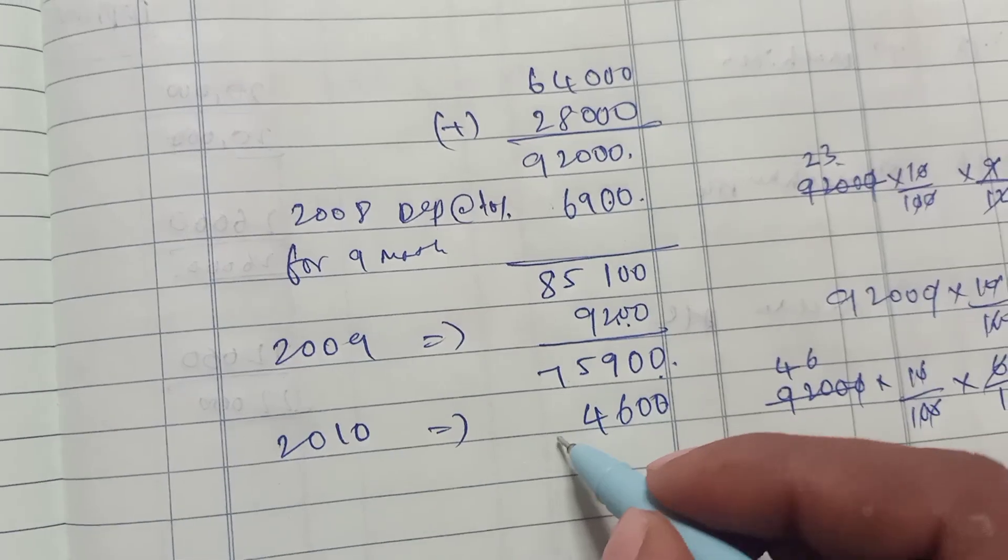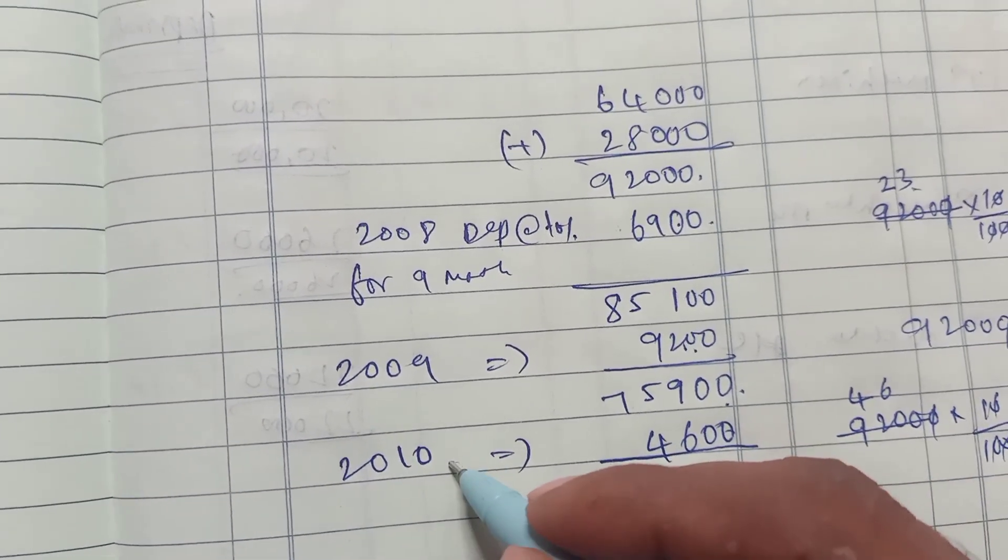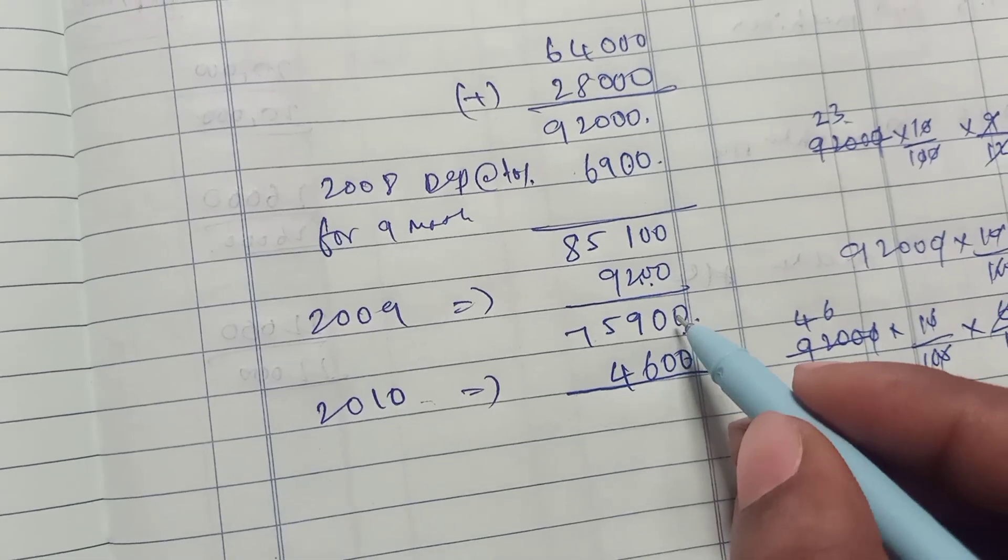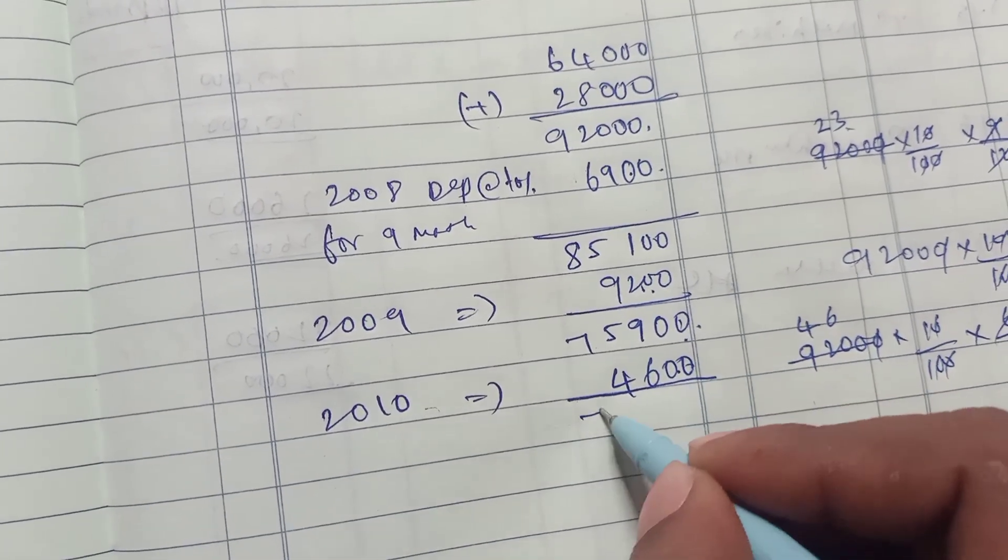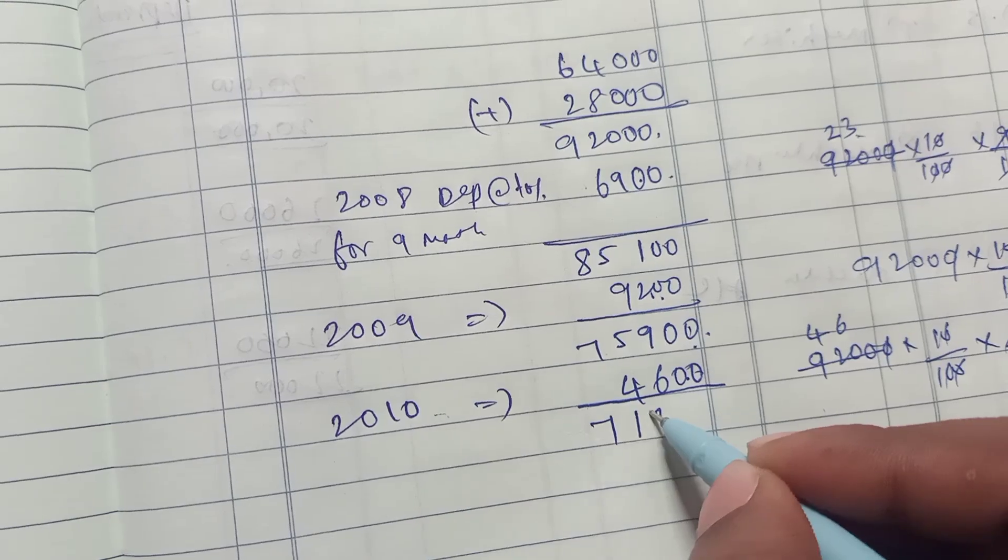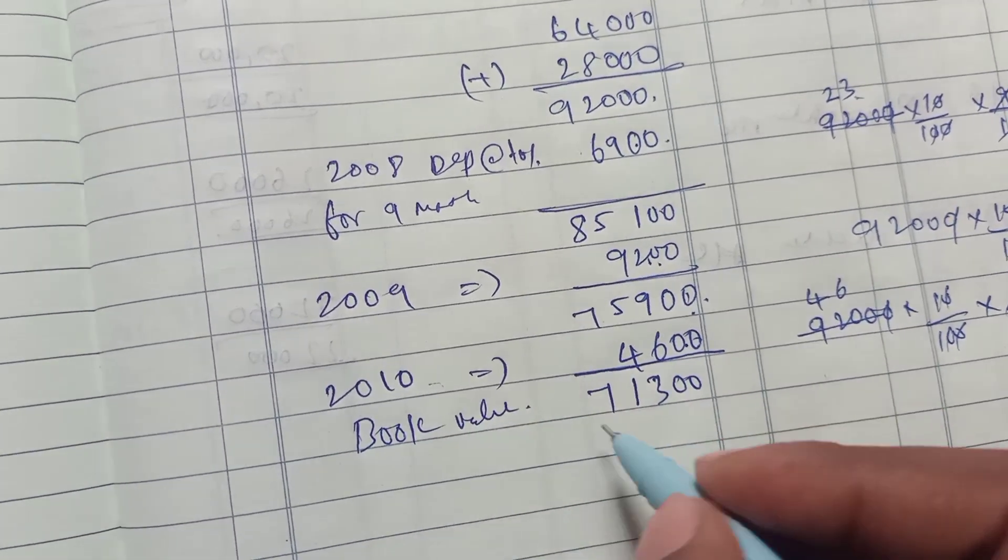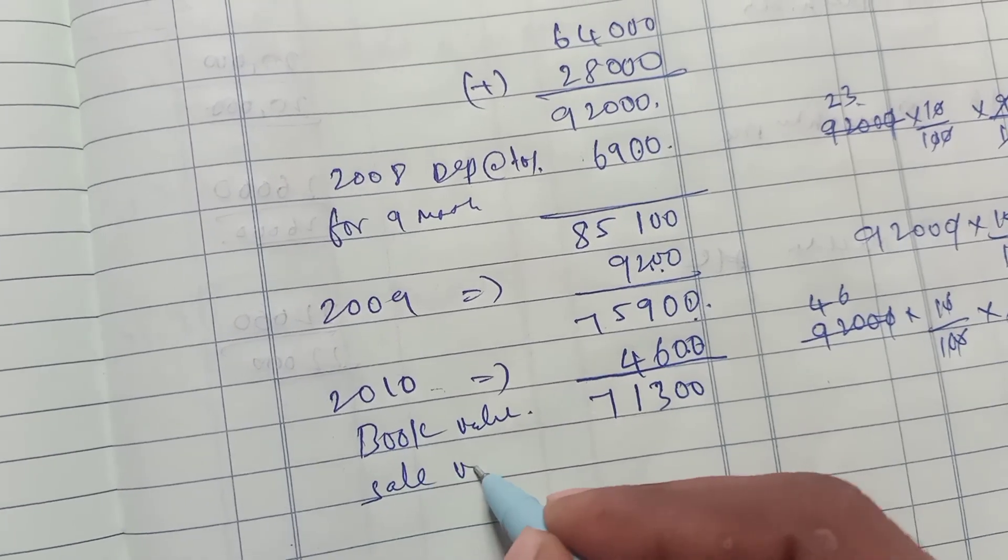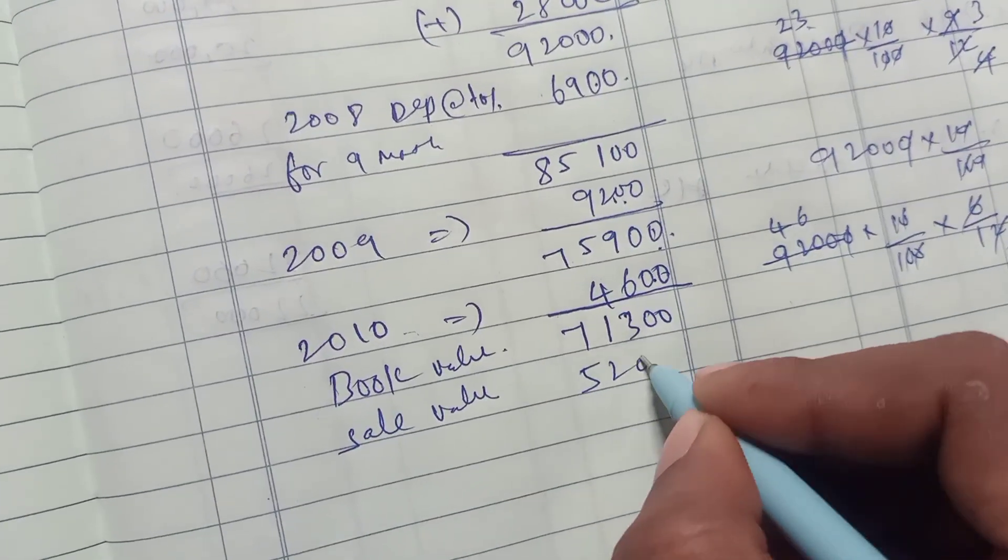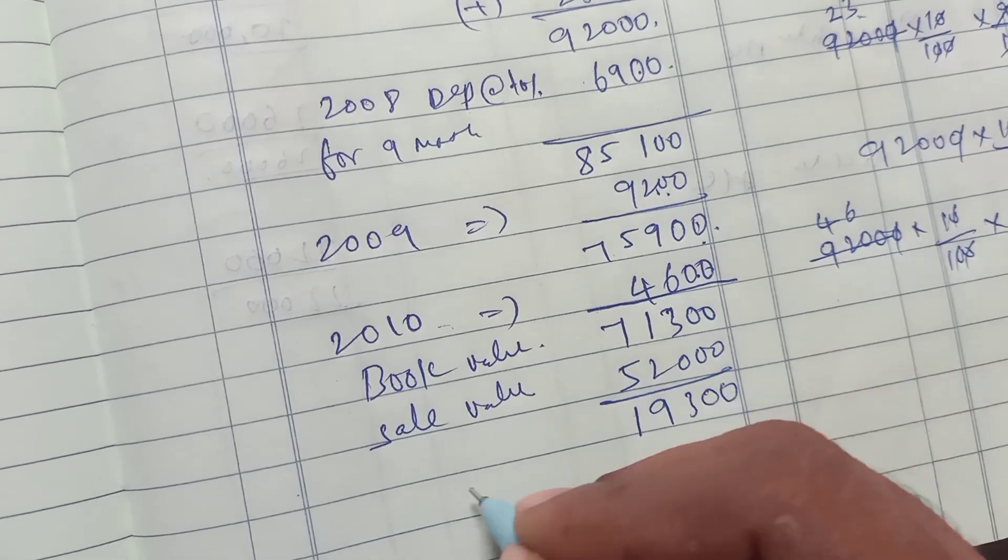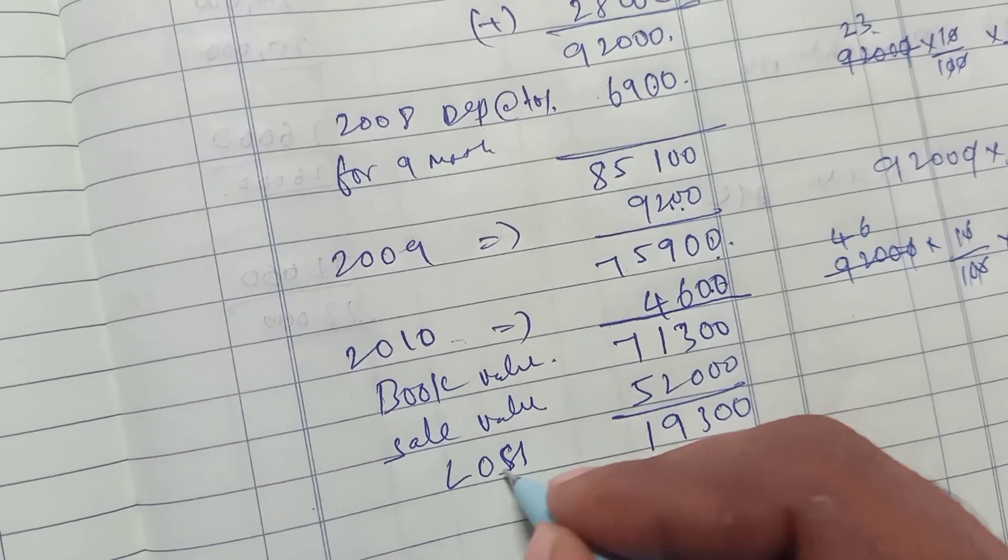Current year 6 months depreciation on 30th June. Book value $75,900 minus $4,600, balance is $71,300. This is the book value. The sale value is $52,000.